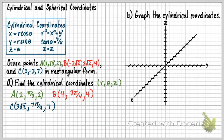Now this part says graph the cylindrical coordinates. So we found the coordinates in the last video, and that's this A, B, and C here. And now what we're going to do is we're just going to graph them, and then you can really see how these actually graph.